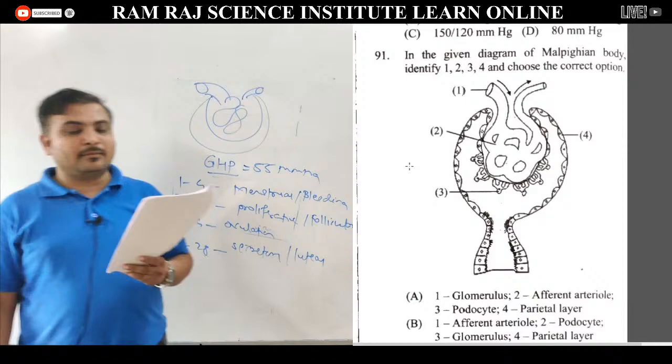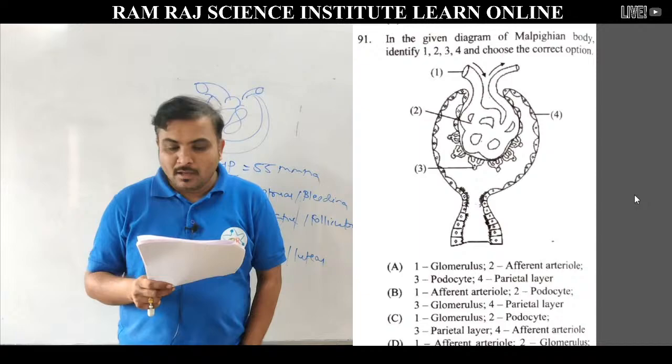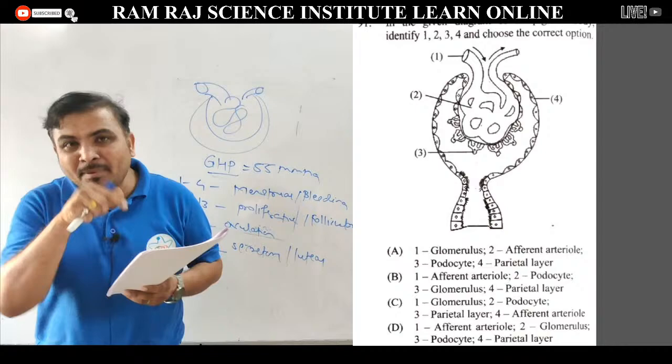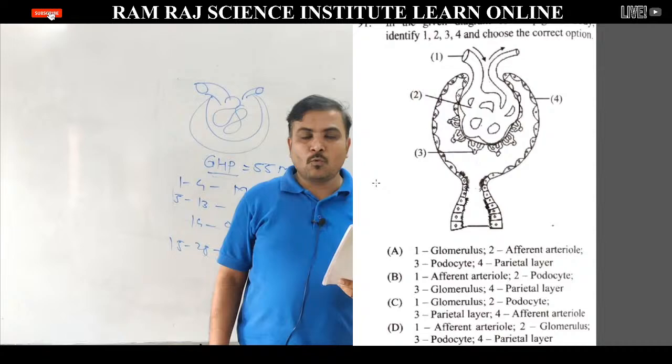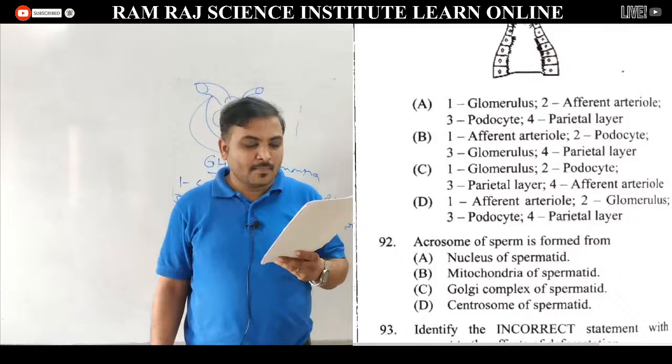Question 91: diagram दिया है, 1, 2, 3, 4 identify करना है. 1 है afferent arteriole, 2 है glomerulus, 3 है podocytes, और 4 है parietal layer of Bowman's capsule. यह match हो रहा है option D में — afferent arteriole, glomerulus, podocyte, parietal layer. Correct answer is option D.